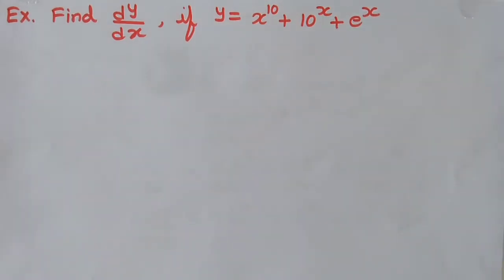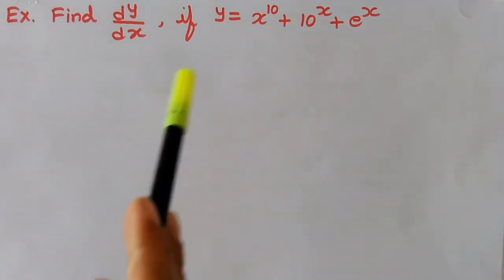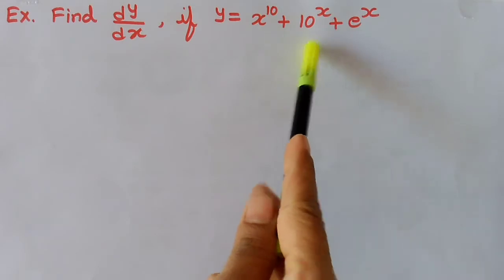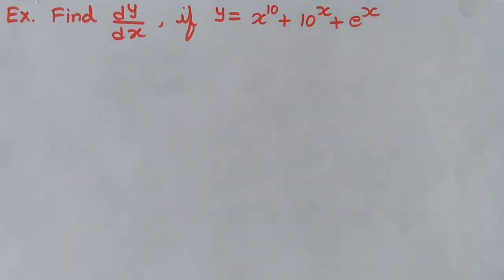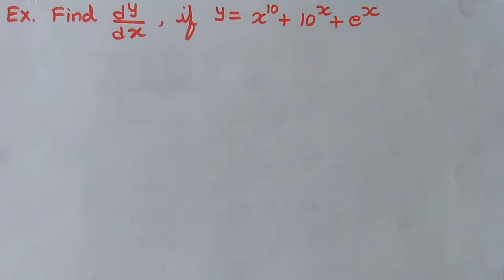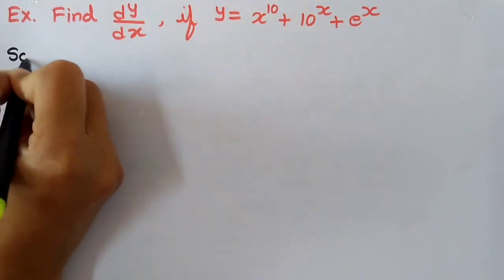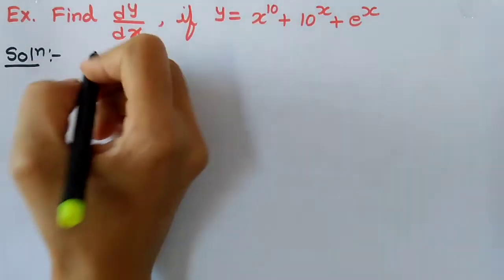Let's look at one more example. Find dy/dx if y equals x to the power 10, plus 10 raised to the power x, plus e raised to the power x. This is in exactly the same form as the previous example. Looking back, the earlier example had x^n — where n means any real number. So let's solve this example the same way.